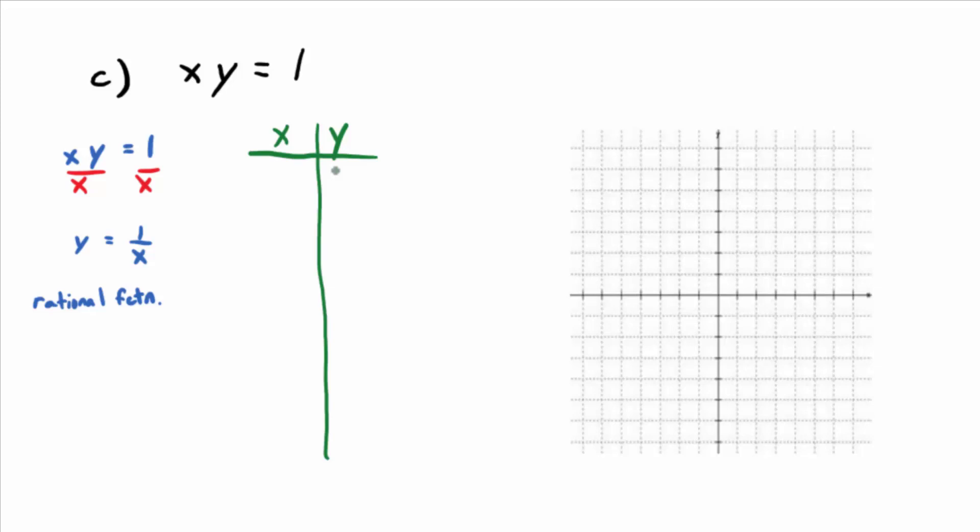Whatever value you plug in for x, you're just going to flip it to get the y value, right? So what would be some good values to plug in for x? Zero would be a terrible value to plug in. Does everybody see why? Zero, you plug in zero.